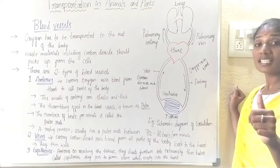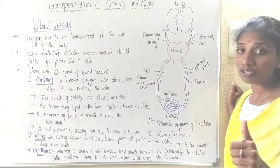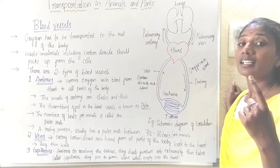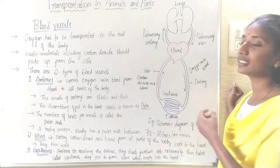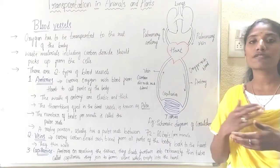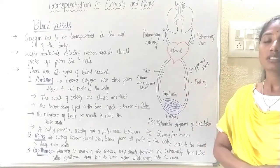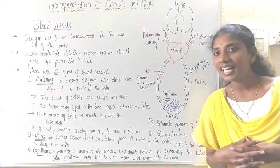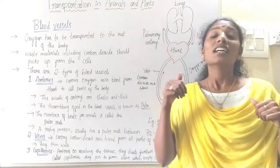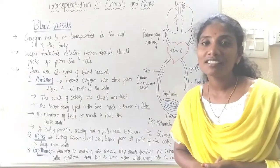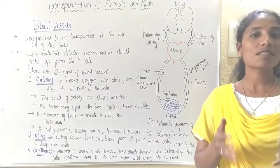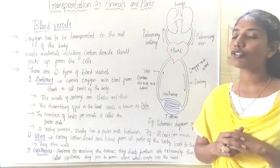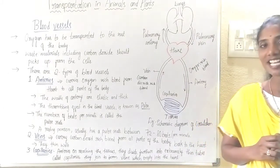Students, keep in mind there are mainly three types of blood vessels: arteries, veins and capillaries. Arteries carry oxygen-rich blood, veins carry carbon dioxide-rich blood, and capillaries help in the exchange of substances between blood and tissues. That is about today's class. Give a thumbs up if you like the video, please share, subscribe to the channel and tap the bell icon for further notifications.